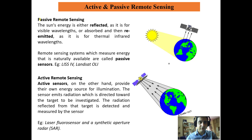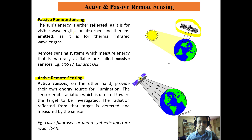We have another classification of remote sensing systems called passive remote sensing and active remote sensing. Passive remote sensing is when the earth gets its energy or electromagnetic spectrum from the sun, and the same energy is reflected by the earth and recorded on the sensor placed on a satellite. This may be for visible wavelengths, or it may be absorbed and then re-emitted in the form of thermal infrared, as discussed in the previous slide.